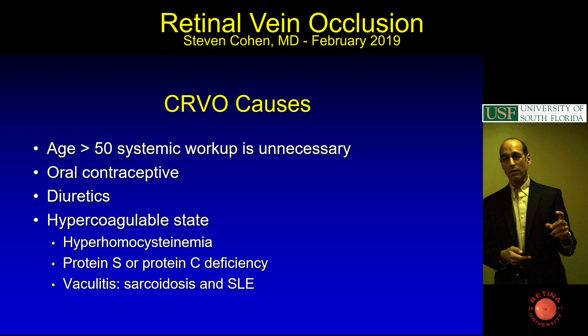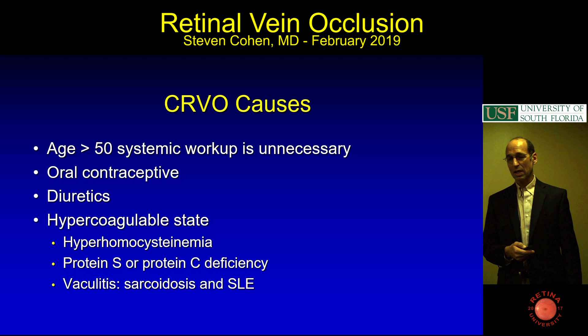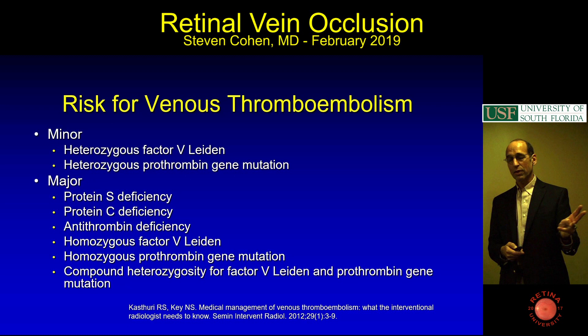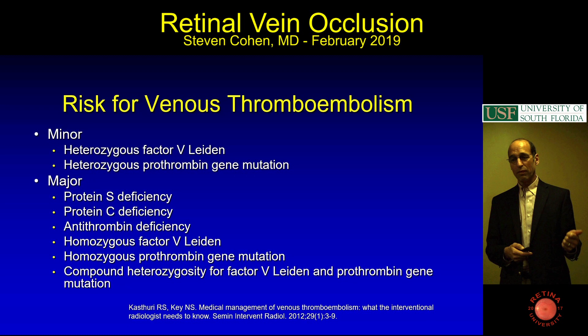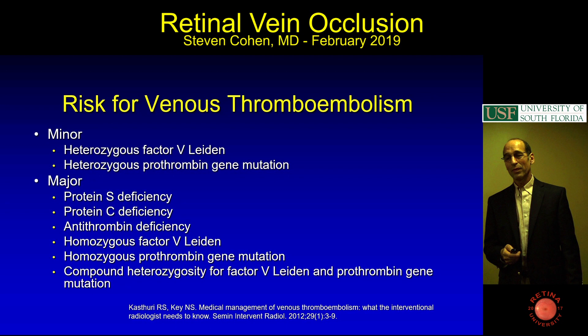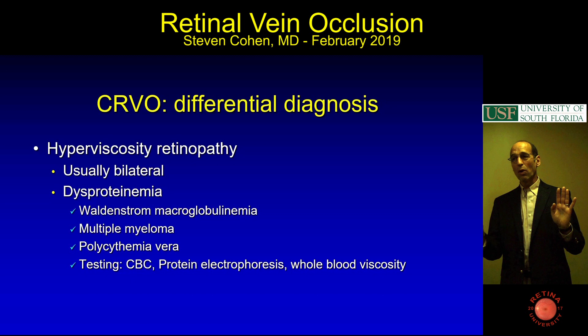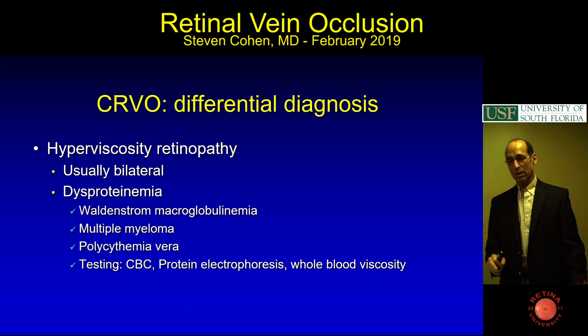There are many things to worry about in central vein occlusion. For thromboembolism risk, most fields now look at genetic testing—factor V Leiden, prothrombin gene mutation, protein S, protein C, antithrombin deficiency. For the differential diagnosis, if both eyes look sluggish and occluded, you've got to look for dysproteinemias like gammopathies, and you can check protein electrophoresis, blood viscosity, and CBCs.